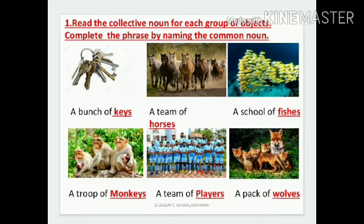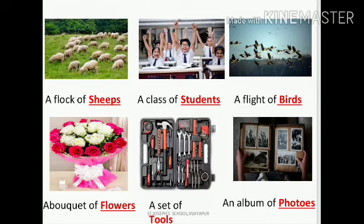Sixth one: a pack of foxes. Next picture shows some ships, so a flock of ships. Eighth one: students are sitting in the class, so a class of students — a group of students we call class. Next: a flight of birds — flight is a group name, birds' group name is flight.